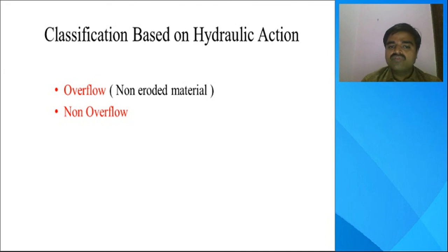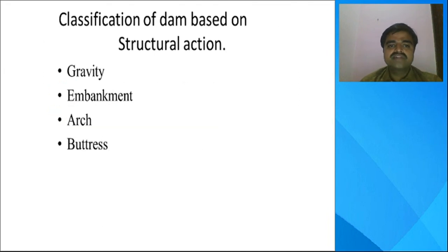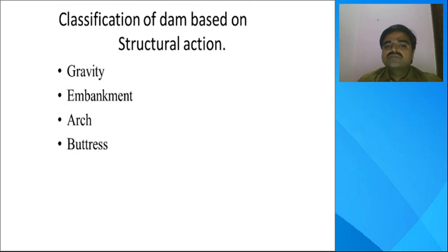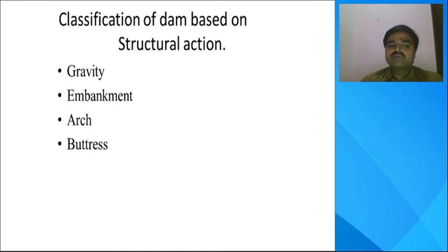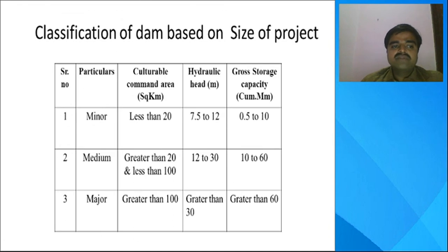The next classification is based on hydraulic action — overflow and non-overflow dams. Following that, the classification based on structural action has four types: first is gravity, second is embankment, third is arch, and fourth is buttress dam.